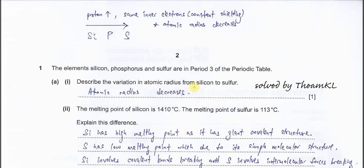Describe the variation in atomic radius from silicon to sulfur. From silicon to sulfur, there is a cross period. These elements are in the same period, so they have the same inner electrons and a constant shielding effect. Across a period, proton number increases. When proton number increases and shielding is almost constant, the attraction of the nucleus towards the valence electrons is stronger, so the size becomes smaller. Therefore, atomic radius decreases from silicon to sulfur.